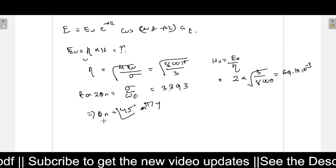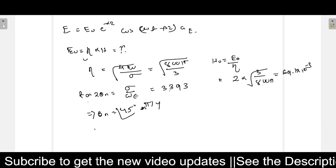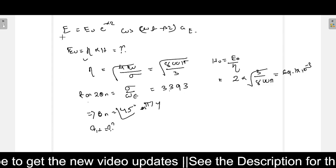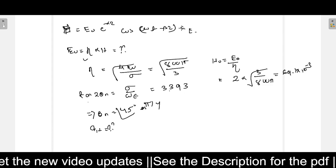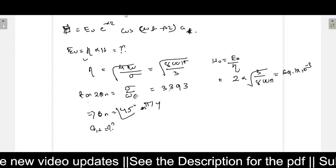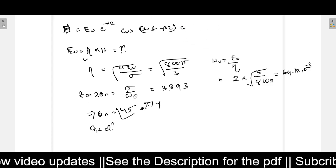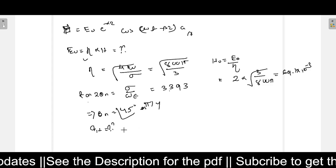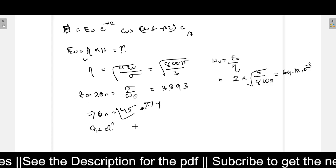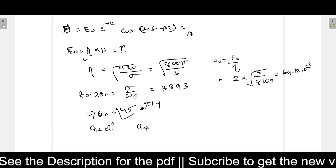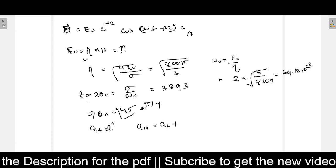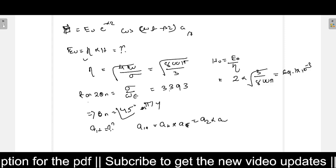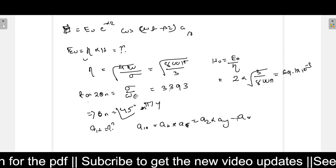Now you know all the values, and we need to write the expression for H. One more thing is pending: what is a_H direction? Here it is H, and it is also H. What is the H direction now? To find that, we know a_H equals a_k cross a_E. That equals a_z cross a_y, and we will get as minus a_x.